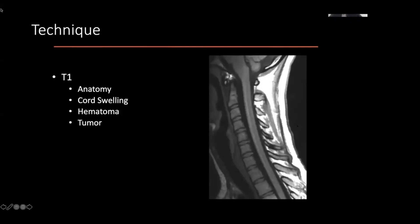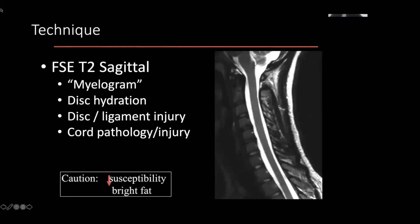Because marrow signal changes when you have infiltration — the typically intermediate signal of tumor becomes very dark — T1 can be very good for looking for tumor infiltration. In summary, T1 is mostly about looking at fat and blood.